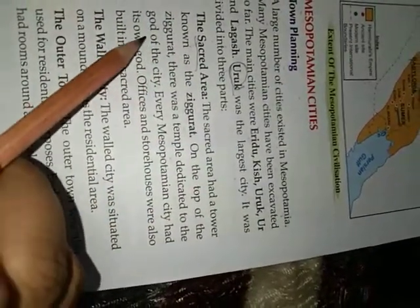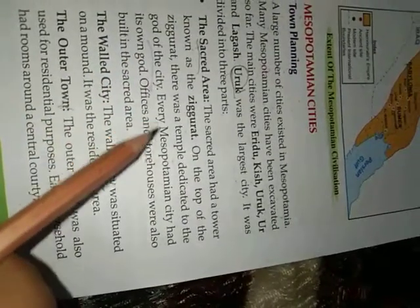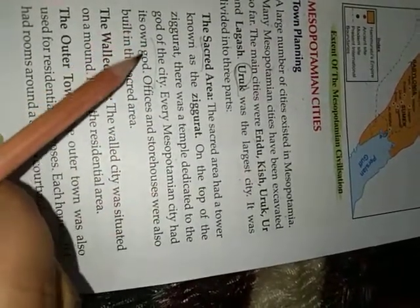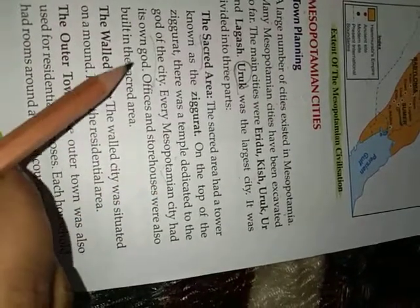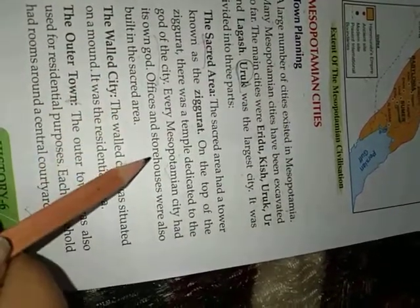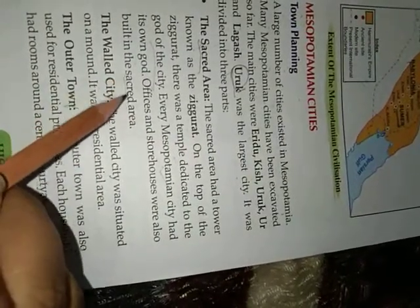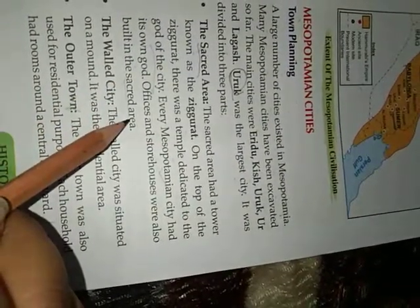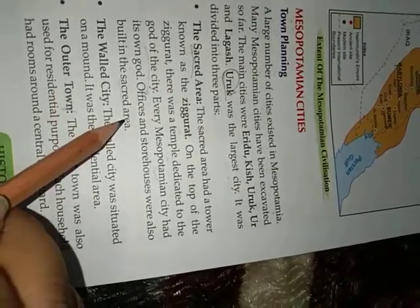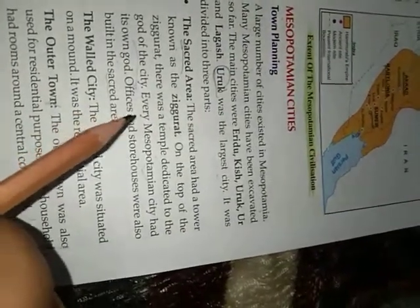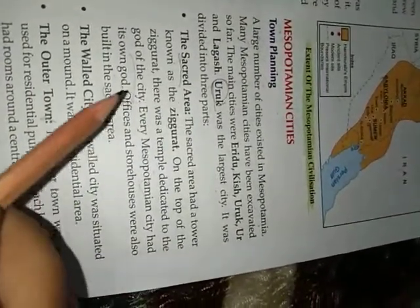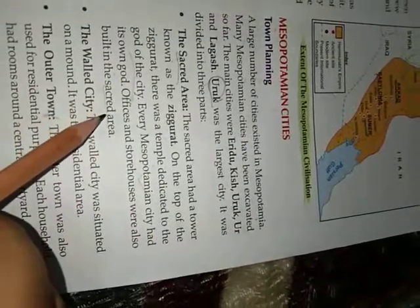On the top of the Ziggurat there was a temple, dedicated to the god of the city — we called this the city's god. Every Mesopotamian city had its own deity. Offices and storehouses were also built in the Sacred Area. The Sacred Area thus contained temples, offices, and storehouses.